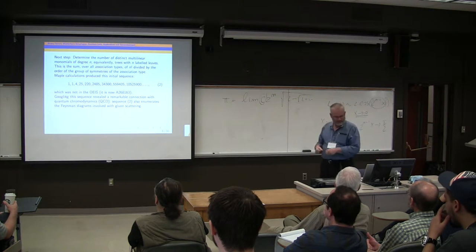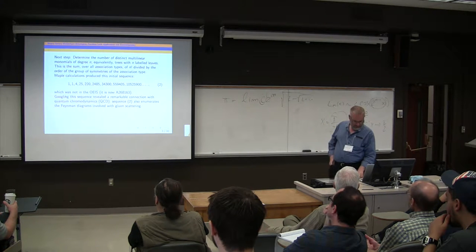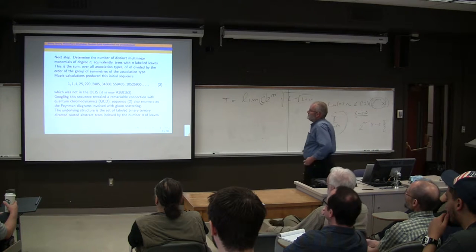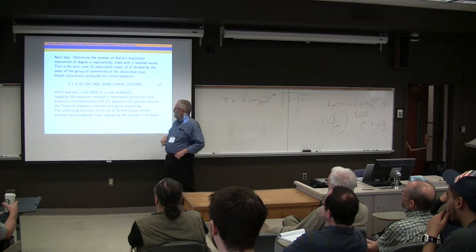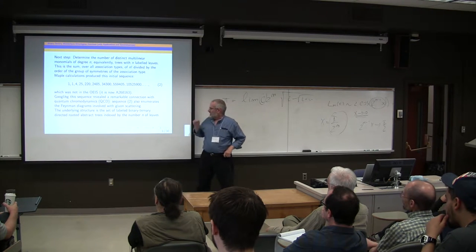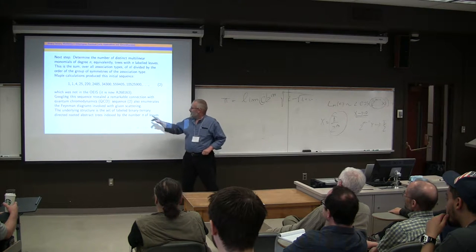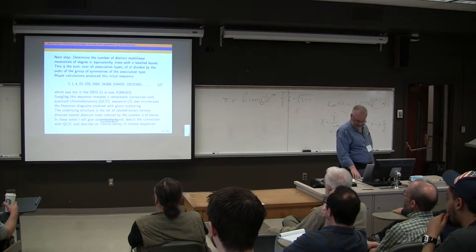Gluons are the particles that hold quarks together in the protons and the neutrons in the nucleus. And the underlying structure in both cases is the set of labeled binary ternary rooted abstract trees indexed by the number of leaves.